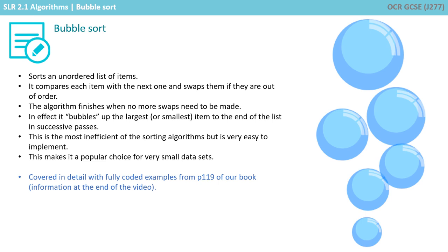It sorts an ordered list of items. It compares each item with the next one and then swaps them if they're out of order. The algorithm finishes when no more swaps need to be made. In effect, it bubbles up the largest or smallest item to the end of the list in successive passes.